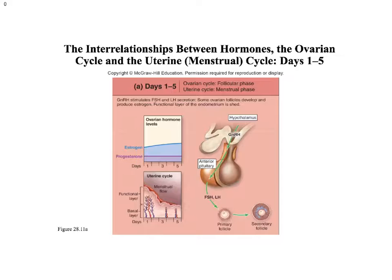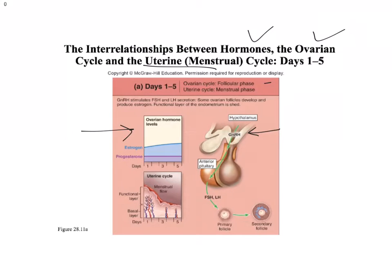Here are the relationships between the hormones, what's going on in the ovaries, and what's going on in the uterus. Day one to five — if you look at the ovaries, it's the follicular phase, so the follicle is growing. GnRH is coming in, stimulating the anterior pituitary, and the anterior pituitary is stimulating the production of FSH and LH, which stimulates the primary follicle and the secondary follicle.